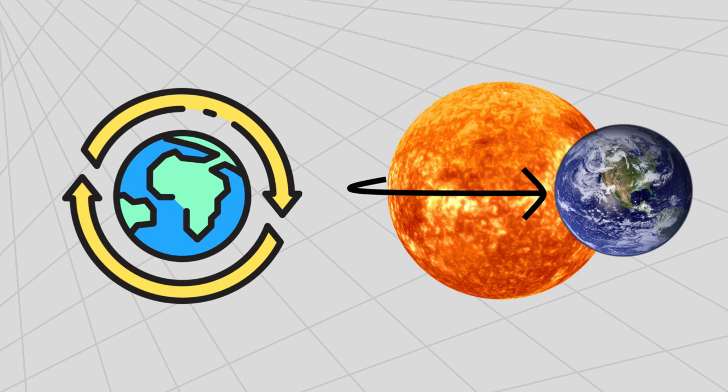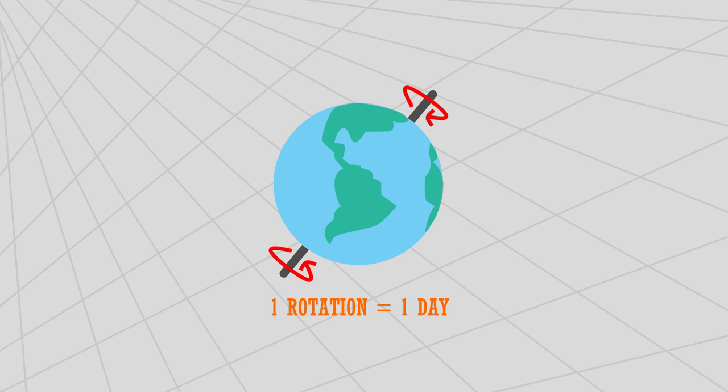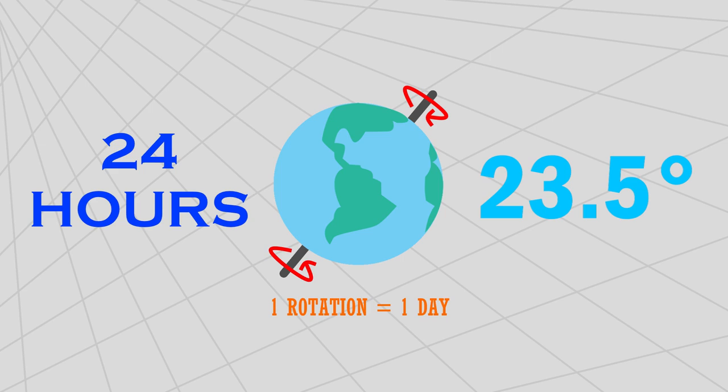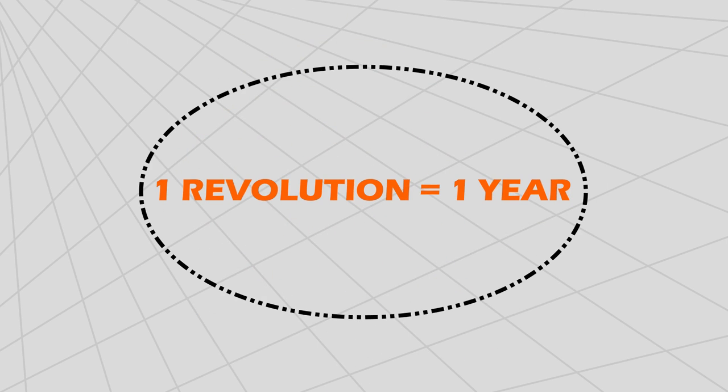The Earth spins around on its axis, and it takes one whole day to make one full rotation—that's about 24 hours. The Earth's axis is slightly on an angle, which is currently about 23.5 degrees. At the same time, the Earth revolves around the Sun, making an elliptical orbit. It takes one whole year to make one full revolution—that's about 365 and a quarter days.